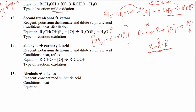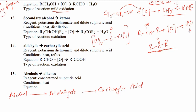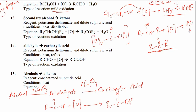Aldehyde can also be further oxidized to carboxylic acid. So alcohol converts to aldehyde, and aldehyde further converts to carboxylic acid. This takes place with the oxidizing agent K₂Cr₂O₇, which provides atomic oxygen. R–CHO plus atomic oxygen converts into R–COOH (carboxylic acid).